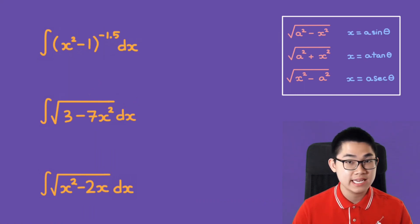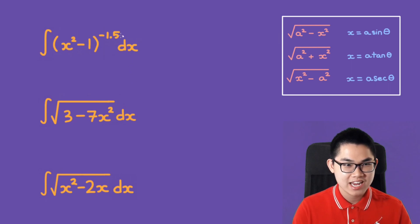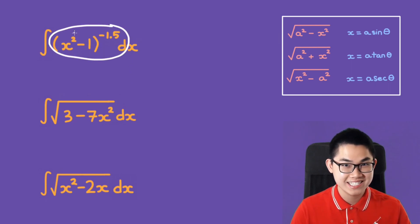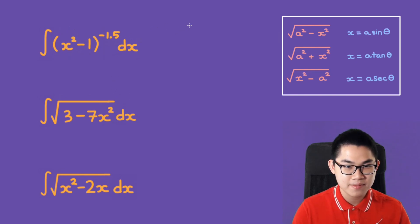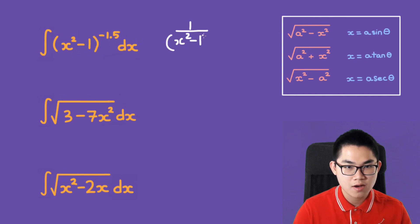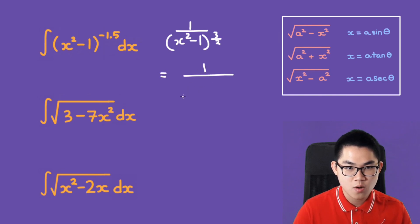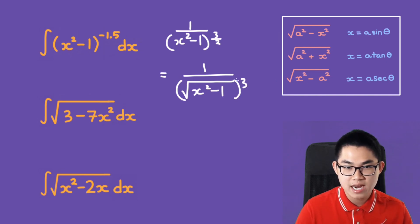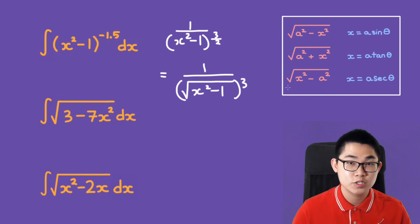Before the next problem, note that some integrals may appear without a square root, but they still apply — for example, 1/(x² − 1)^(3/2) is the same as 1/√((x² − 1)³), so trigonometric substitution still applies.